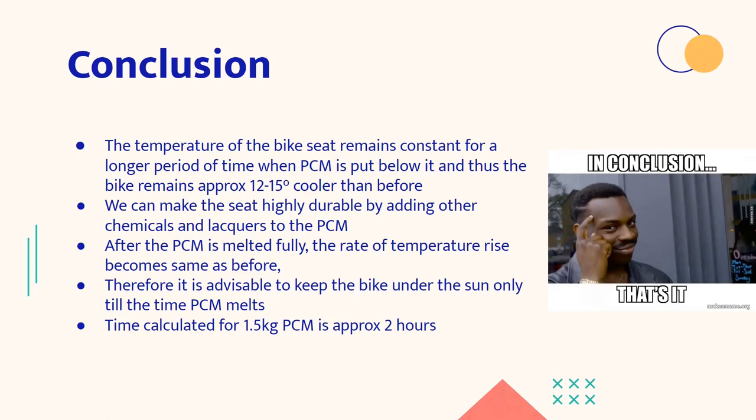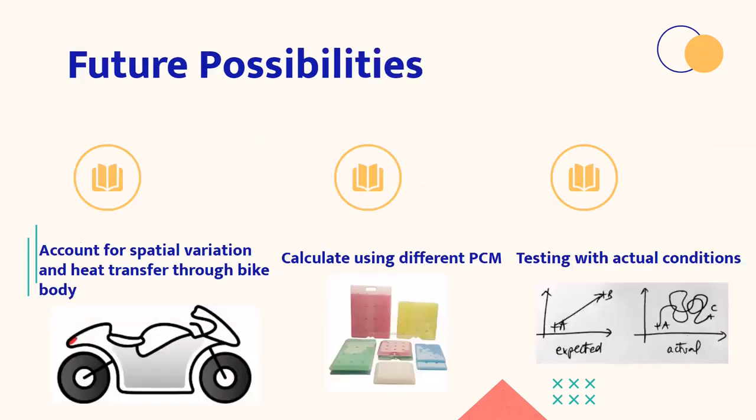If we extrapolate our calculations and we find the PCM required if we want to keep our bike standing in the sun for two hours, we get the value of PCM to be 1.5 kgs. So here is our future possibilities and future plans. Firstly, we want to account for the spatial variation which we have not considered in this problem. And also we have considered that there is no heat transfer occurring between the seat and the rest of the bike, but this could not happen as the bike has a lot of components that generate heat like engine. So we need to consider heat transfer to bike as well.